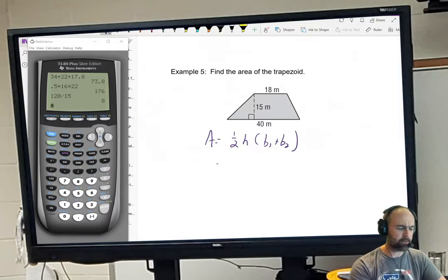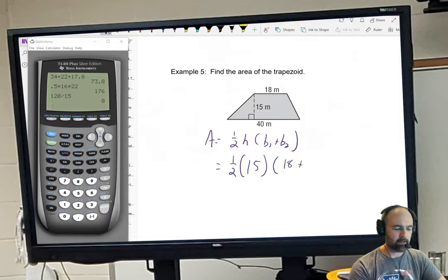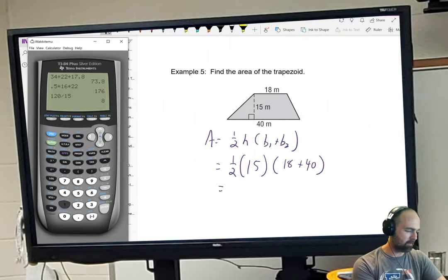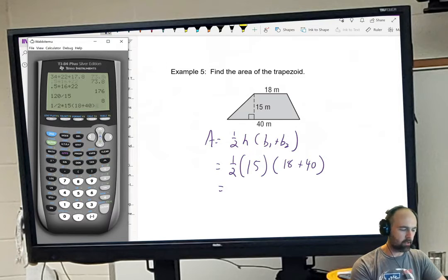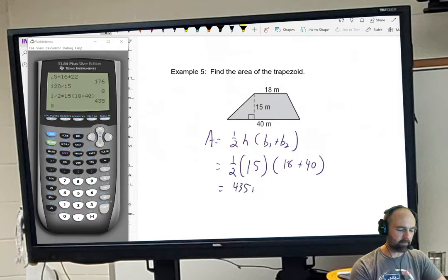Again, whichever one is base one or base two doesn't matter. One half times height here is 15, times base one is 18 plus base two is 40. And I can go and type that in the calculator directly like it is: one half times 15 times 18 plus 40. And we get 435 meters squared as my area.